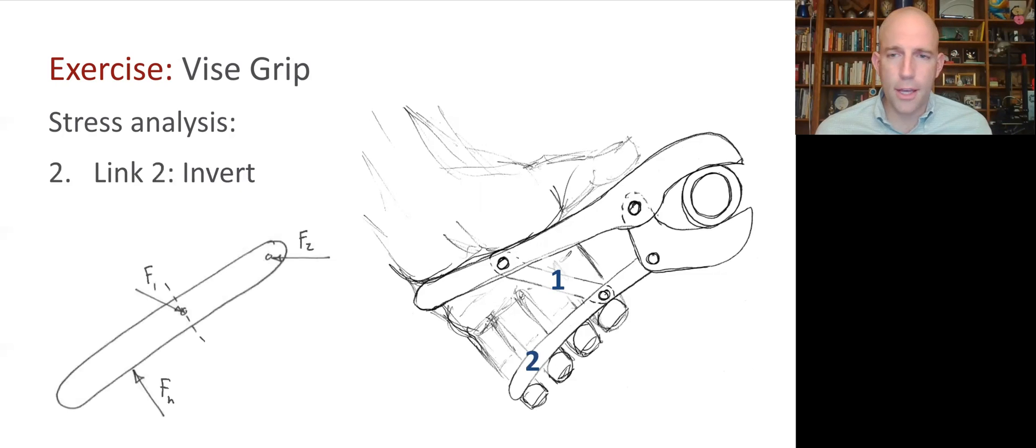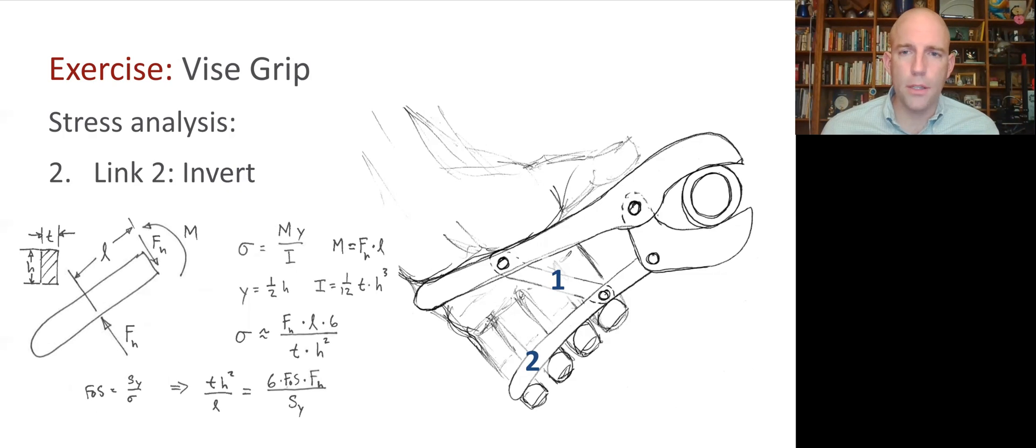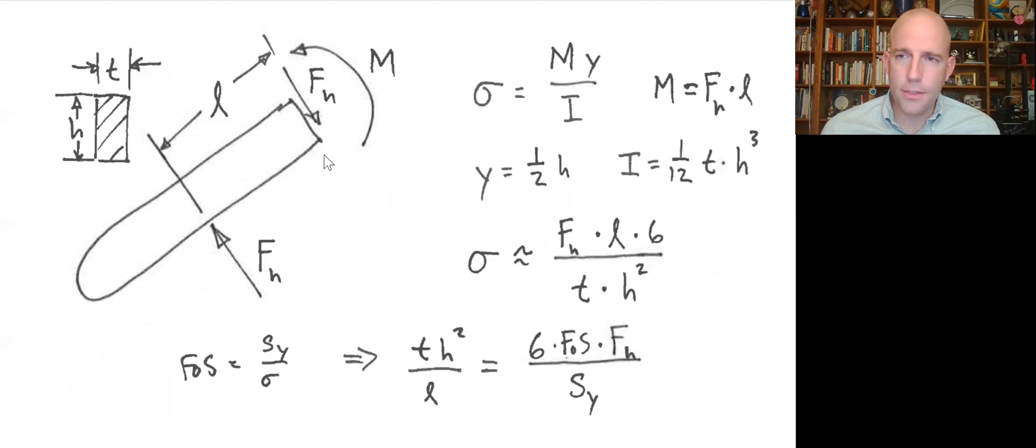All right. So as we saw in the free body diagram lecture, the FBD for link two looks something like this, where we have this force from the hand, a force from link one and a force from link three there. And my guess is that the stress will be highest due to bending. And so if we want to know what the stress is at the point of high bending, well, the point of high bending will probably be around here where the force of the hand and force two have the largest lever arm. So we'll have to make a cut here and perform another free body diagram so we can see what the moment is. If we do that, we'll get something that looks like this. And let me zoom in a little bit so that we can see the math better. So here's that cut right where link one comes in and we can see that there'll be a moment because this force in the hand is offset from that point by a distance that we're calling L. So we just come up with some parameter names here.